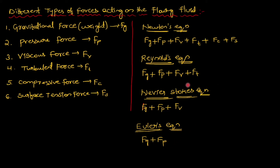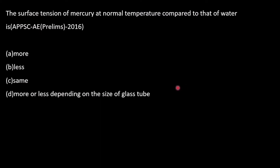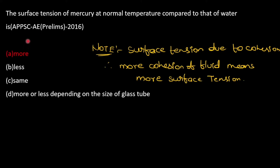Next question: the surface tension of mercury at normal temperature compared to that of water is more. Mercury surface tension will be more than water because mercury has more cohesion than water. Note: surface tension is due to cohesion, therefore more cohesion of fluid means more surface tension.